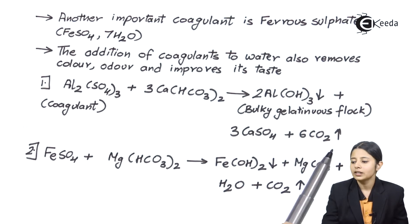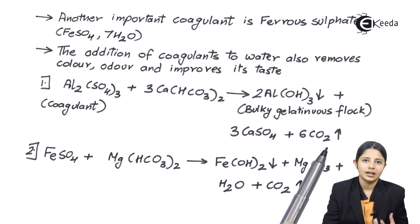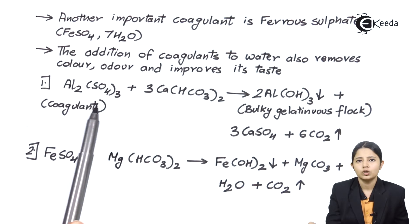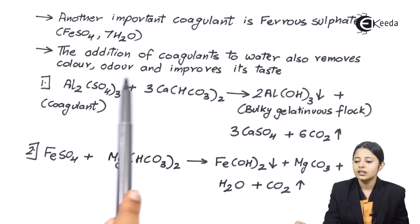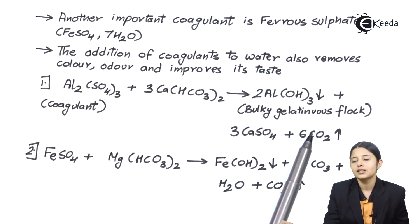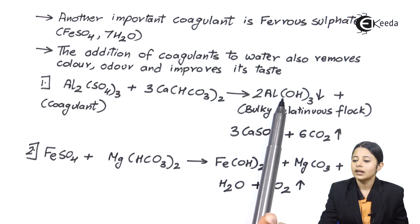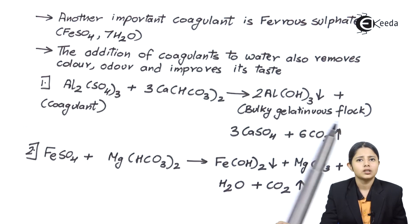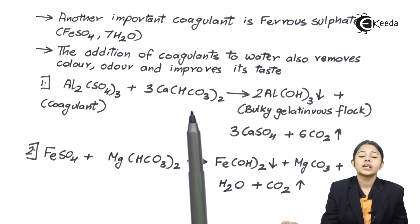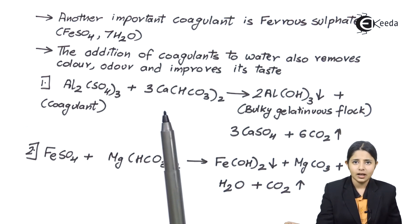The CO2 produced is in a volatile, gaseous form and will go away. The 2Al(OH)3 forms a bulky gelatinous floc, which is a precipitate that settles down to the bottom of the tank and can be easily removed. By this, we can easily eliminate the colloidal particles.